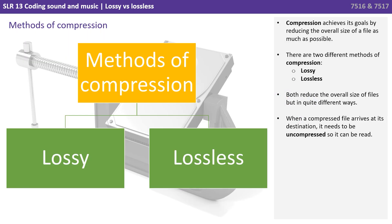Compression achieves its goals by reducing the overall size of a file as much as possible. There are two different methods of compression: lossy and lossless. Both reduce the overall size of files but in very different ways. When a compressed file arrives at its destination, it needs to be uncompressed so it can be read again.